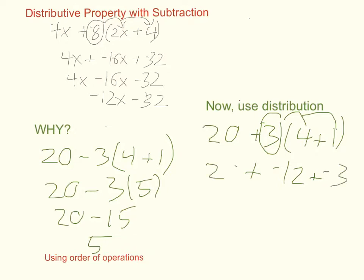So it's 20 plus negative 12 plus negative 3. Negative 12 and negative 3 make a negative 15. So this is like 20 plus negative, or 20 minus 15, again, which is equal to 5.